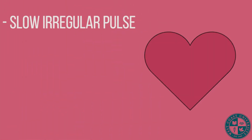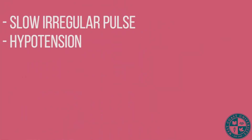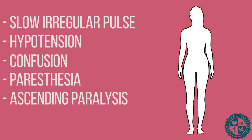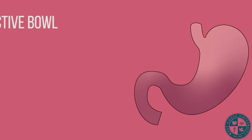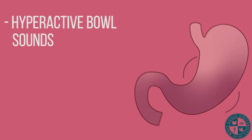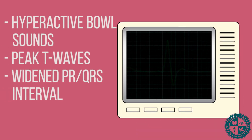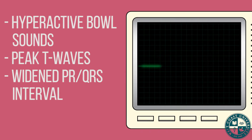What are our expected findings with this client? They may present with a slow irregular pulse, hypotension, confusion, paresthesias, ascending paralysis, diarrhea, and hyperactive bowel sounds. The EKG may show peaked T waves, a widened PR interval and QRS interval, and lastly, asystole.